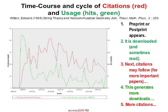This is the time, course, and cycle of citations and usage. Usage is in green, citations are in red. First, a paper — a preprint or a postprint — is deposited. Then it's downloaded sometimes, and the downloads are sometimes read. From reading them, they might get cited. The citing article might then be downloaded, which generates more citations, which again generates more downloads. That's the interaction between downloads and citations.